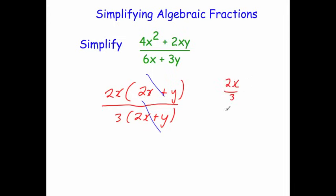That can also be written as 2 thirds x. Both forms are the same expression — cancelling out the 2x plus y leaves you with 2x over 3.